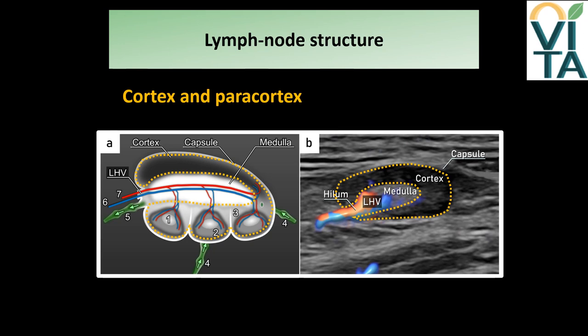The cortex is the outer area containing mainly B-cells organized in lymphoid follicles. On ultrasound, it is normally visible as a hypoechogenic homogeneous rim surrounding the hyperechogenic medulla. The paracortex is the region between the medulla and the cortex, rich in T-cells, but on ultrasound it is not possible to distinguish it from the cortex.